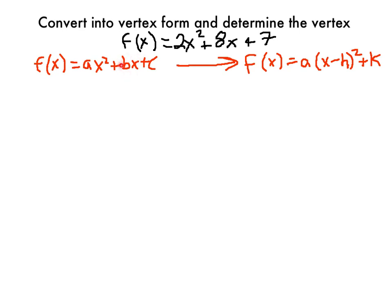We need to somehow combine these two terms here, this x squared term and this x term, together so it is a quantity squared. The variables need to be combined. So the function that I'm going to change is f of x equals 2x squared plus 8x plus 7.